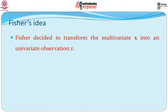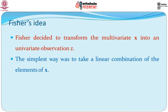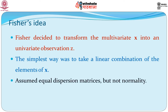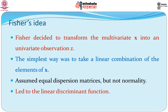Fisher's idea was primarily to transform the multivariate x into a univariate observation z or y. He had a multivariate set of observations m and he wanted to make a linear combination of this into a single variable. As is obvious, the simplest way to do this is to take the linear combination of the elements of x. He assumed that x has the same dispersion matrix, and Fisher's method actually led to the linear discriminant function.